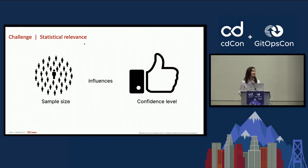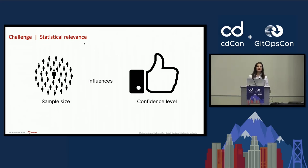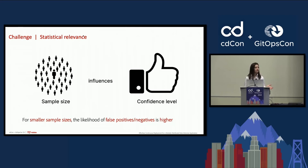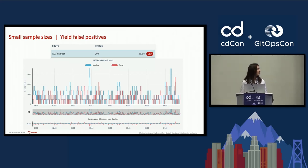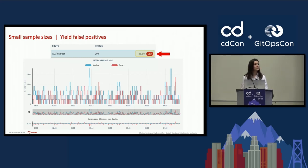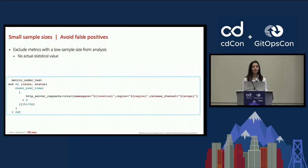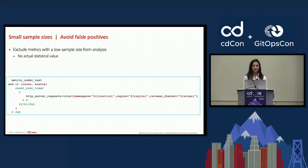Our journey did not end there. The automatic canary analysis wasn't stable yet because we faced another challenge: low frequency metrics. Such metrics lead to small sample sizes for both control and experiment groups, which affects the confidence of the analysis results. If the sample size is too small, we risk receiving false positives or false negatives. For example, with not enough traffic for a specific route, the baseline and canary pods didn't receive the exact same number of requests, and the detected difference was percentage-wise significant but not in terms of data points. To ensure statistical significance, we exclude such metrics using a Prometheus query that filters out metrics without a consistent traffic rate over the last hour.